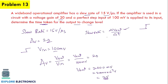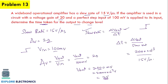Now using the slew rate formula, delta T equals delta Vout divided by slew rate. Delta Vout is 2000×10⁻³ volts divided by a slew rate of 15 volts per microsecond. This gives delta T equal to 0.133 microseconds, which is the time taken for the output to change.